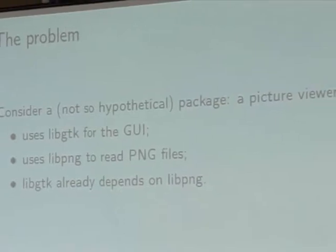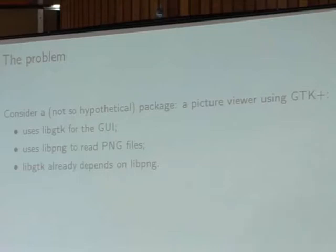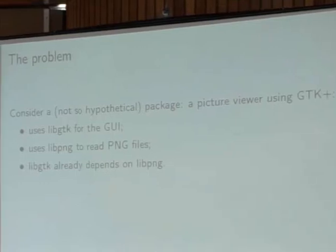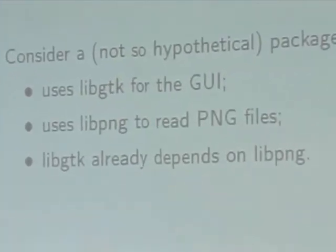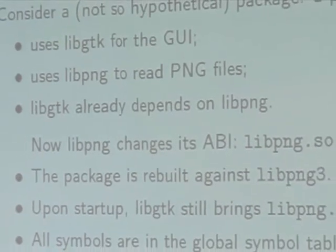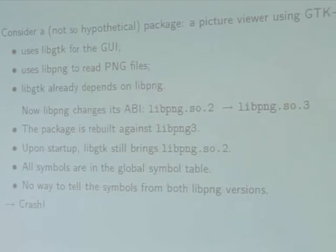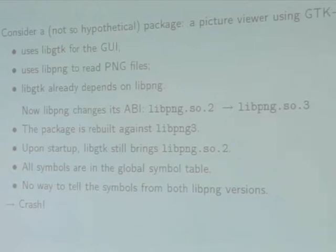We are now moving to a more complicated problem. Consider a picture viewer written using GTK+. It uses GTK for the user interface and libpng to read PNG files. However, GTK already depends on libpng to display its small bitmaps for buttons. Now suppose the libpng developers change their API — the soname of libpng changes — and you say you'll rebuild the package against the new libpng3. But there is a time when libgtk is still linked against the former version. When the application starts, both libpng versions are loaded at the same time, and there is no way to tell symbols from both of them apart — and you crash.